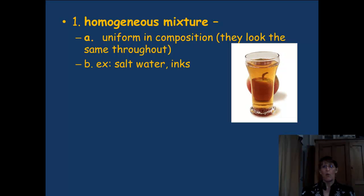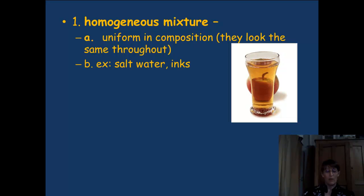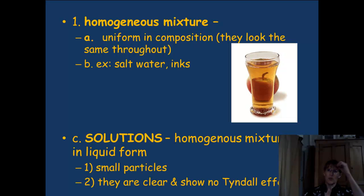You can have a couple types of mixtures: homogenous or homogeneous — it just depends on how you want to say it, both spellings are in the dictionary. Homo means same, so if it's a homogeneous mixture, it's uniform in composition — it looks the same all the way throughout. Like people at McDonald's wearing the same uniform, it looks pretty much the same throughout. Examples: salt water looks the same at the top as at the bottom. The ink from your pen is a mixture of different inks, but it looks the same throughout — it's homogeneous. Apple juice is nice and even all the way through.